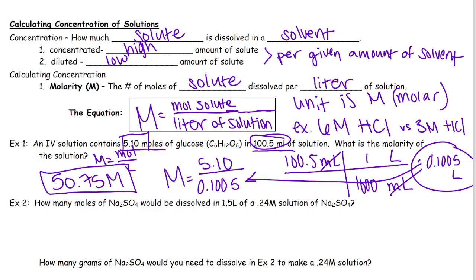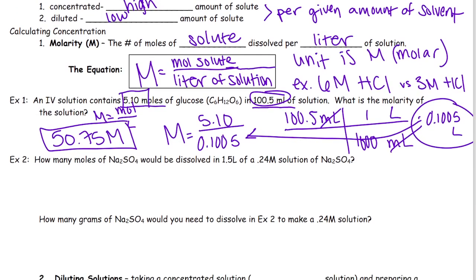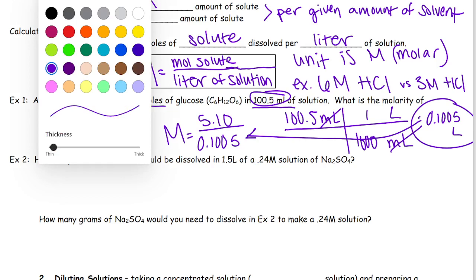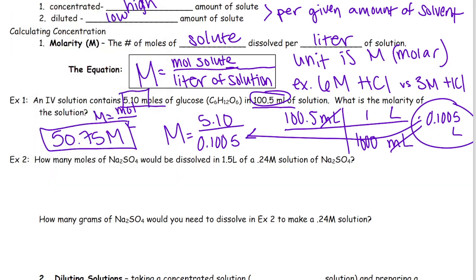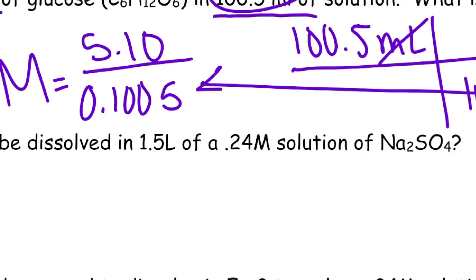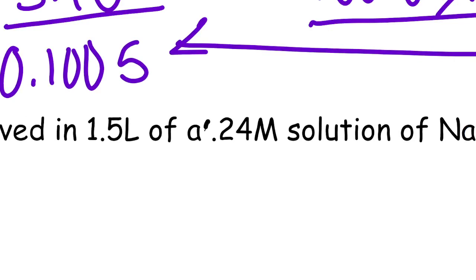Any questions after doing that example? Pretty straightforward. Okay. Example two says, how many moles of Na2SO4 would be dissolved in 1.5 liters of a 0.24 molar solution of Na2SO4? Let's put a zero there. I just got done saying always put the zero, and then this one doesn't have it. Let me zoom it in so I can actually write. So 0.24.